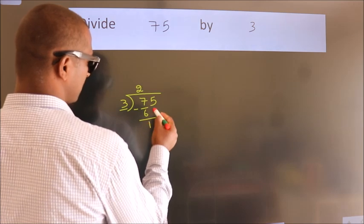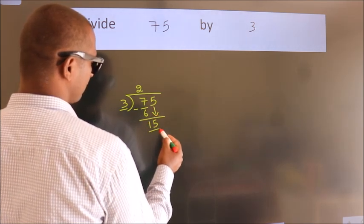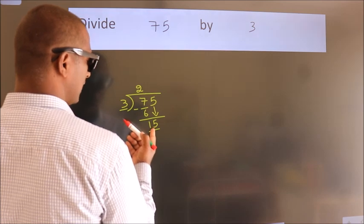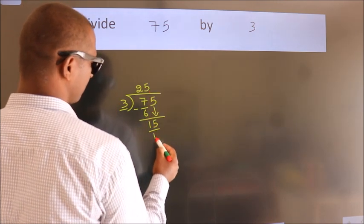After this, bring down the beside number, so 5 down, so 15. When do we get 15? In 3 table, 3 fives, 15.